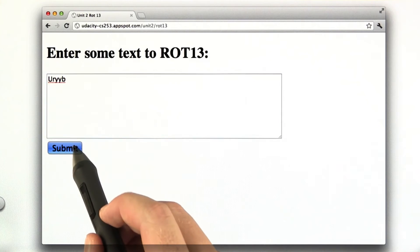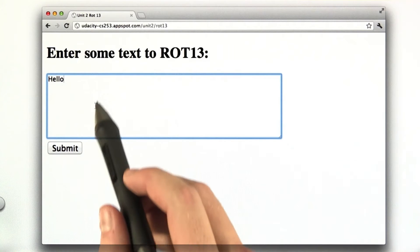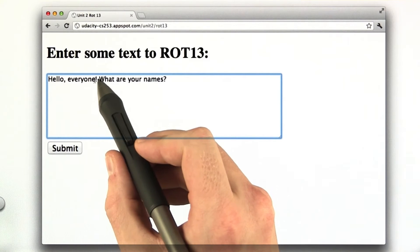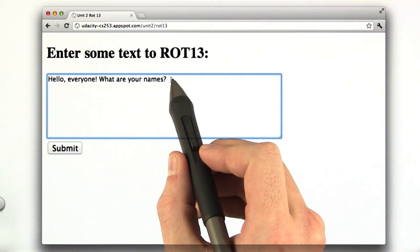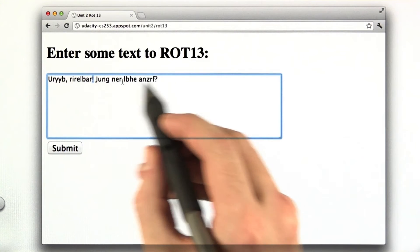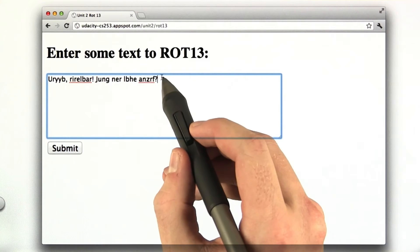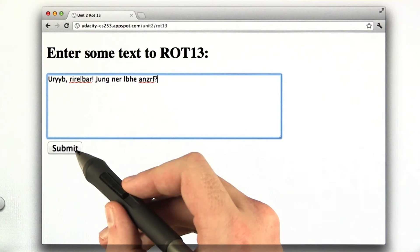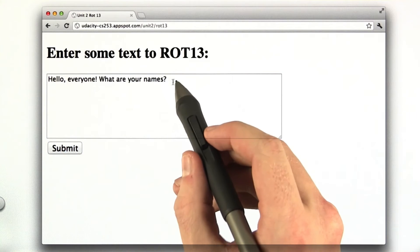I'd also like you to preserve punctuation. So I've expanded my text here to have an exclamation mark and a question mark. And when I rot13 this, it preserves the exclamation mark and the question mark. And everything else becomes rot13. And you know it's working because when you run it again, you get the original text.